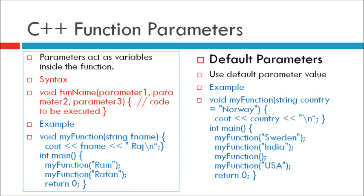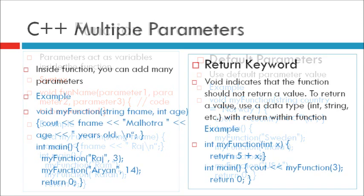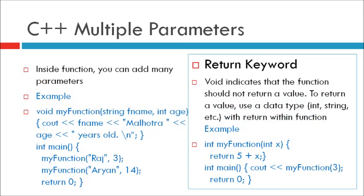C++ Multiple Parameters: Inside the function, you can add as many parameters as you want. For example, void MyFunction in bracket string fname, integer age.